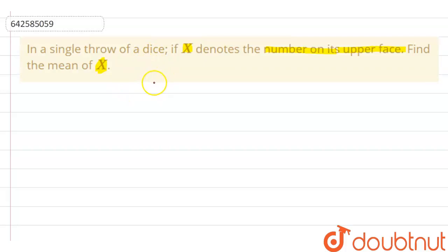So here we can clearly say that X can take the values 1, 2, 3, 4, 5 and 6, and the probability of all of them are as probability of 1, probability of 2.